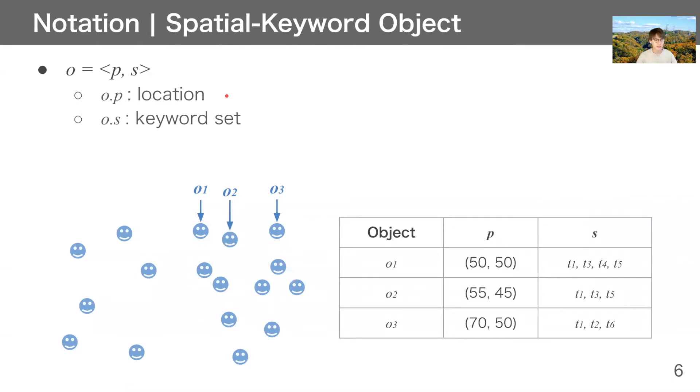Next, we define some notations in our research. First, o is a spatial keyword object, and o.p is its location, which consists of x and y coordinates, and o.s is keyword set.